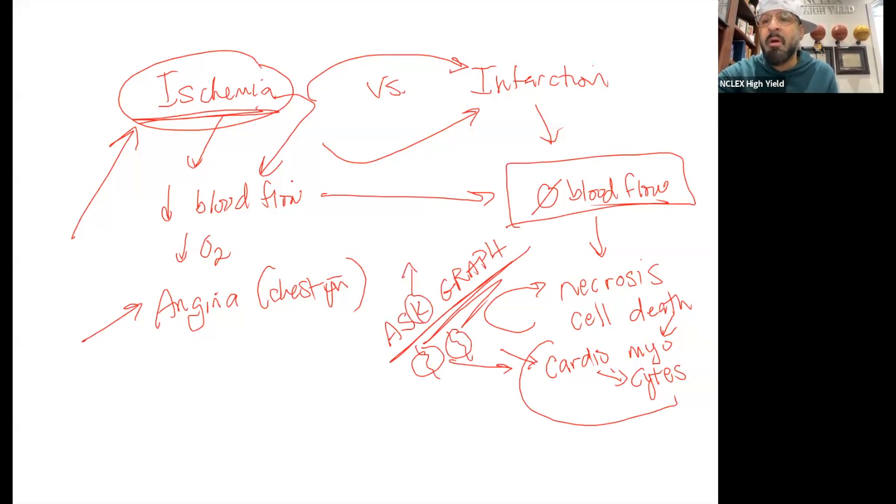So now we're worried about ventricular fibrillation. Or if these cells are dying off because of no blood flow, because of an infarct, it can also lead to weakness in the cell, weakness in the heart wall, which means it can rupture. And now we've got hemorrhaging.